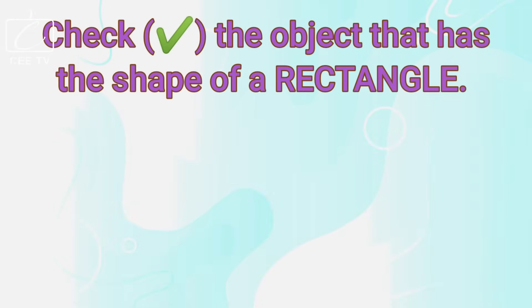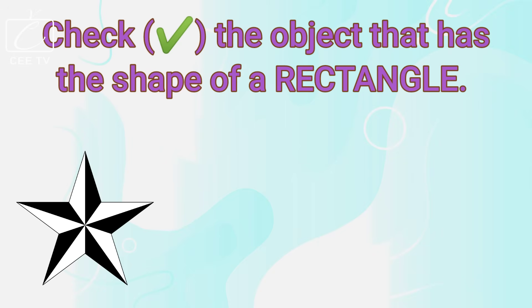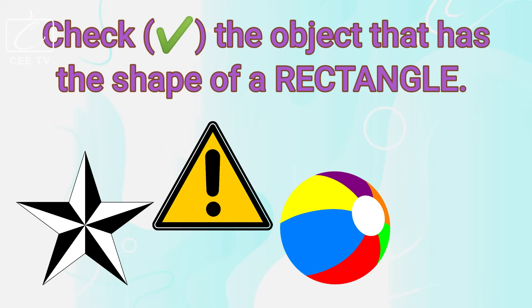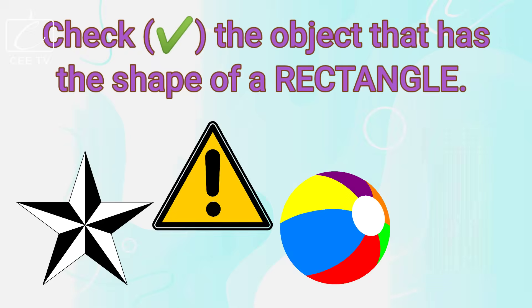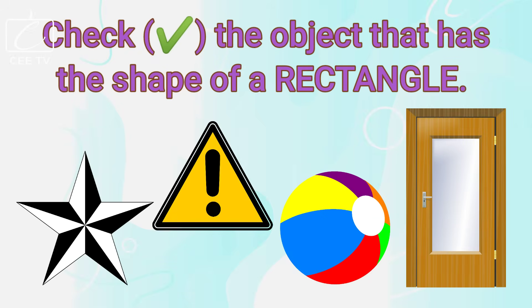Check the object that has the shape of a rectangle. The door has the shape of a rectangle. You are correct! The door has the shape of a rectangle.